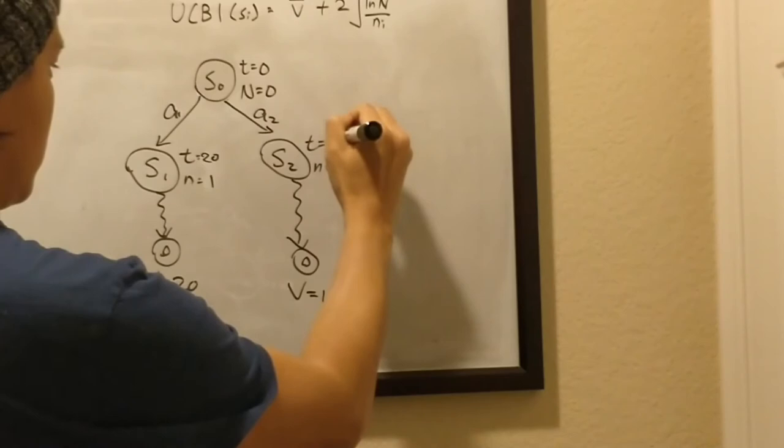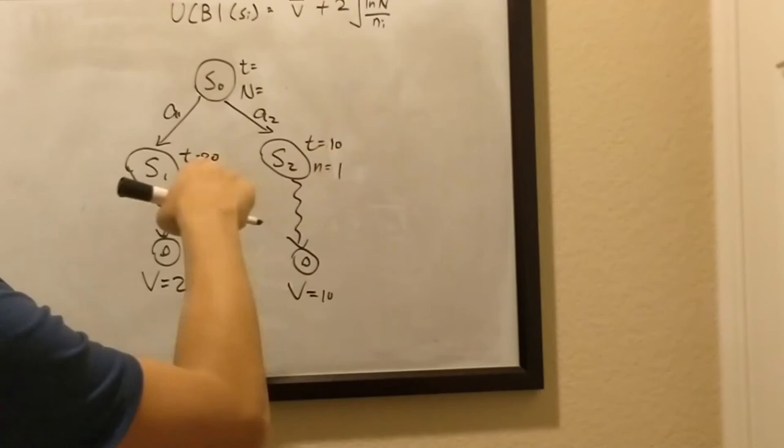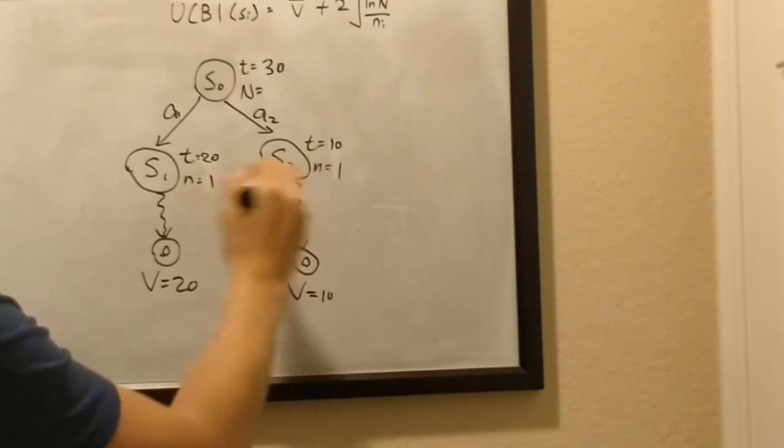I'm sorry. We should have updated this to 20 earlier and 1 here. Now we've done this, so now there's a total reward of 30, and then the number of times we visited is now 2.